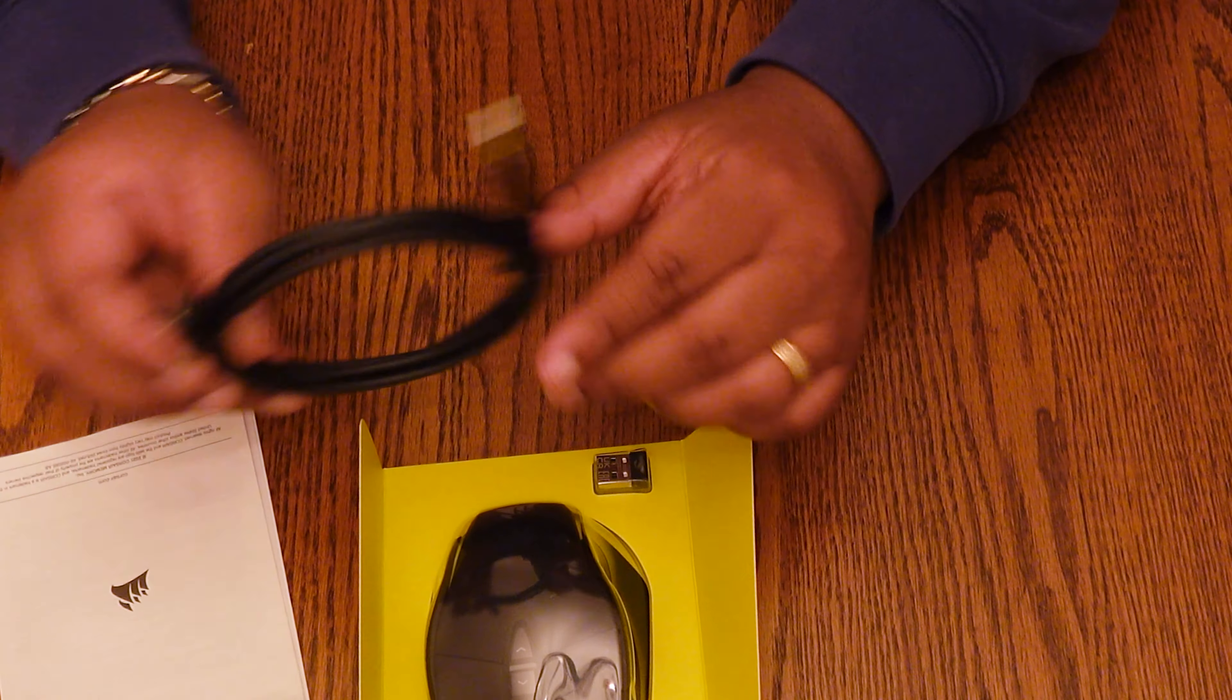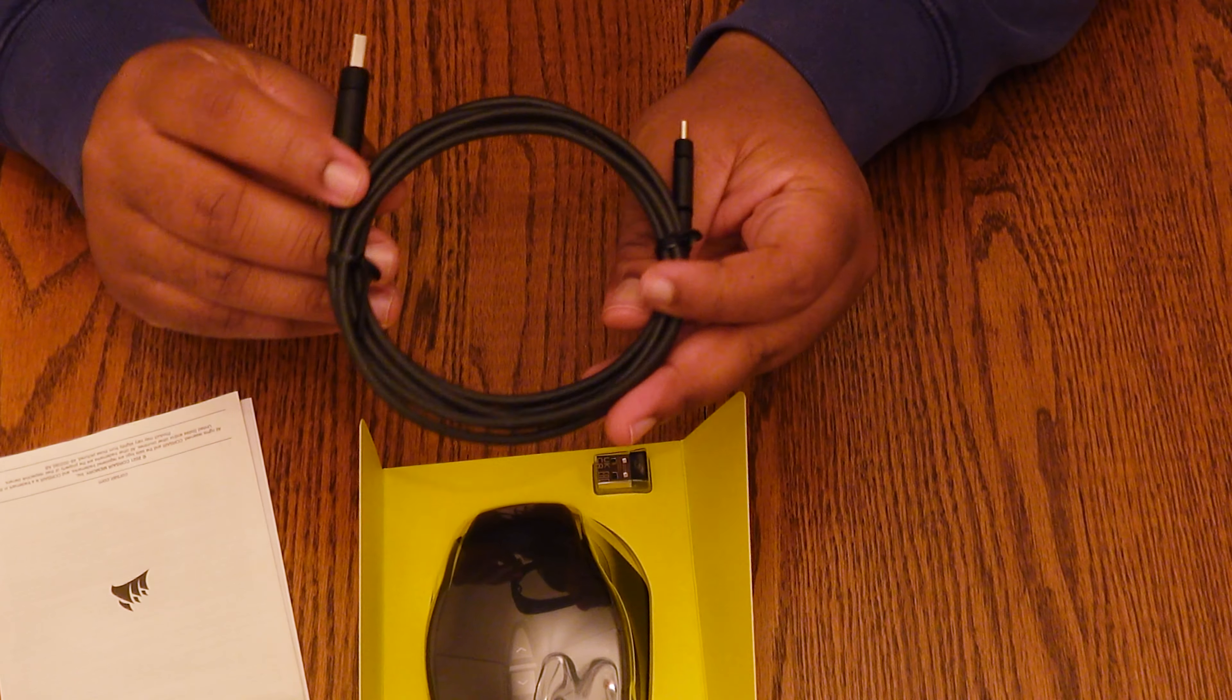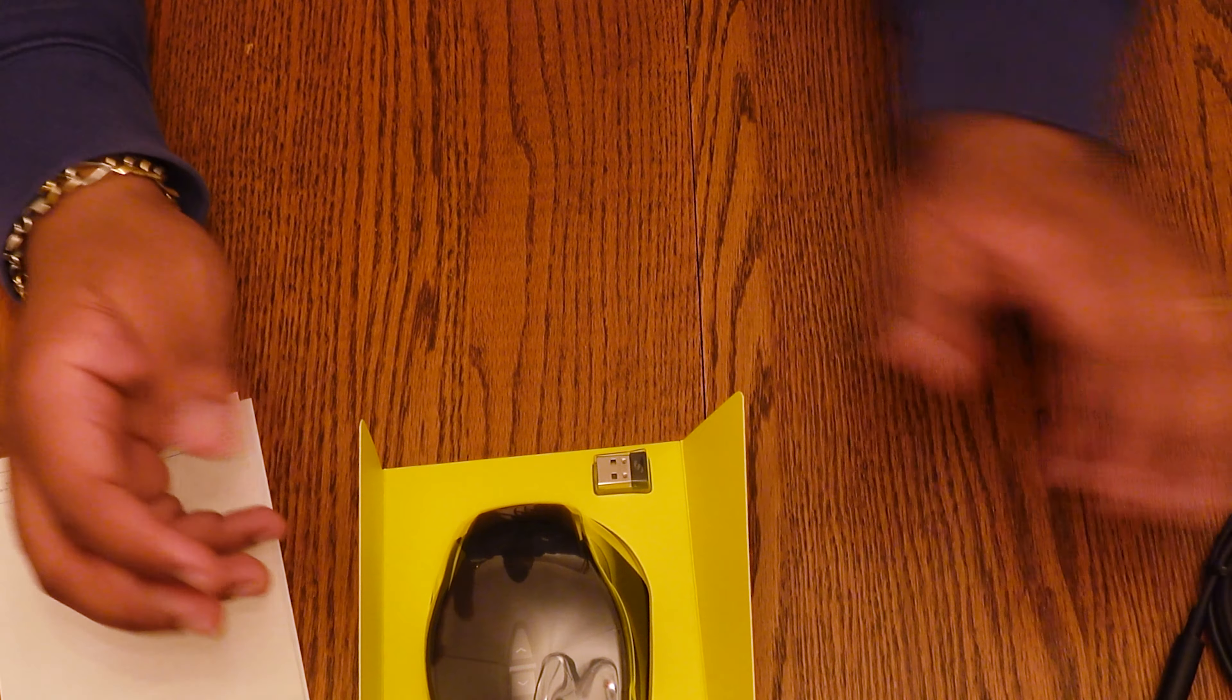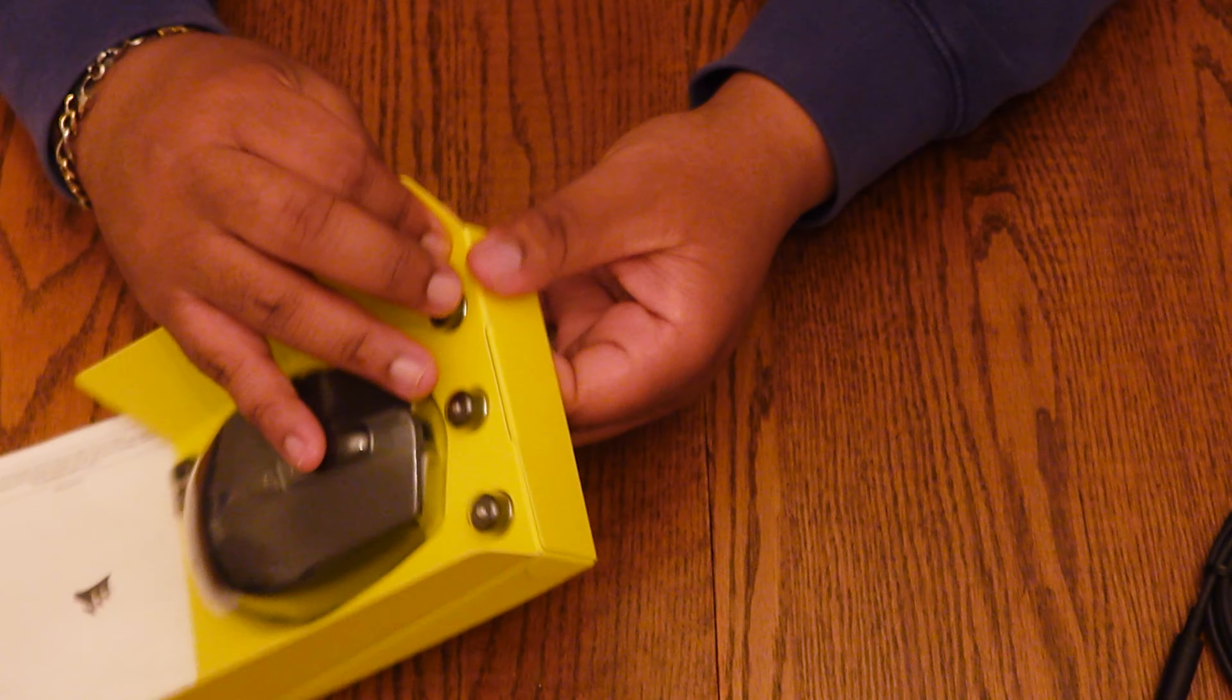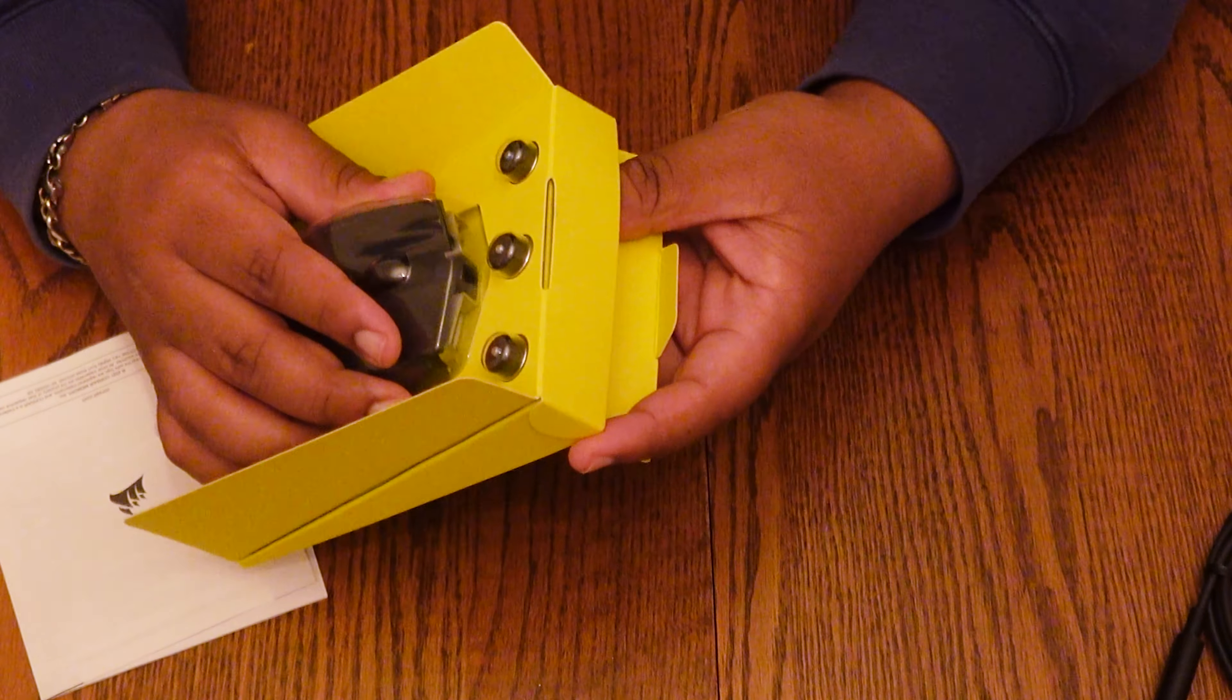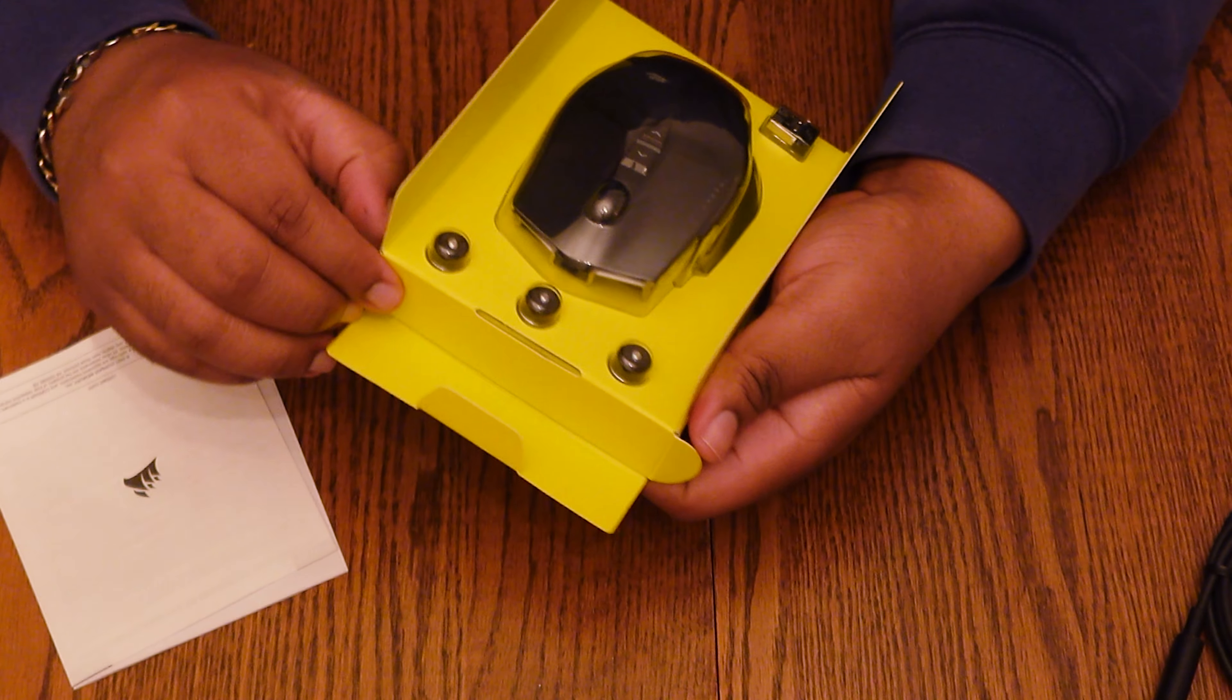So it does include this cord here for your charging. I'm assuming you can use it as a wired mouse too, but the whole point of this thing is to be a wireless mouse. So I will put that to the side for now. I will use that at some point, of course, like to charge, but how do I get this open? I want to show you all the size of this thing because I love me a good Corsair gaming mouse.